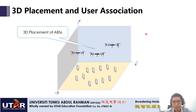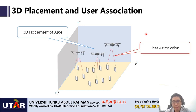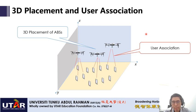With aerial base stations placed in the air, we also need to determine which users should be associated with or served by which aerial base stations. These two things are equally important, and the placement of aerial base stations can affect user association. Different positions of the aerial base stations may result in different users associating with different aerial base stations, because users must associate with the aerial base station that can provide the best or optimum connectivity.